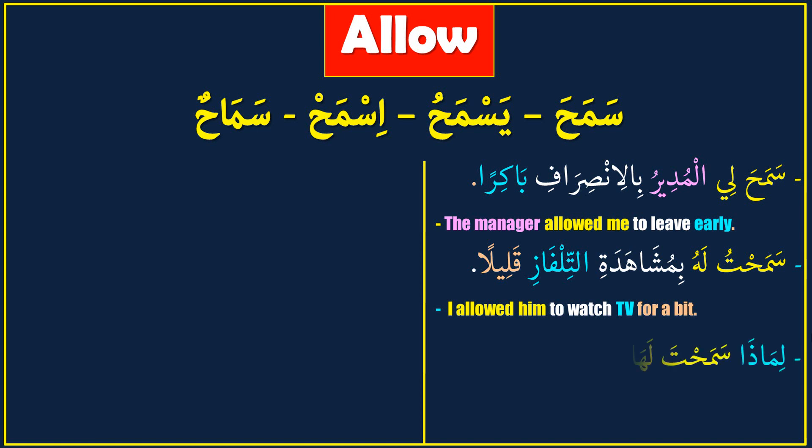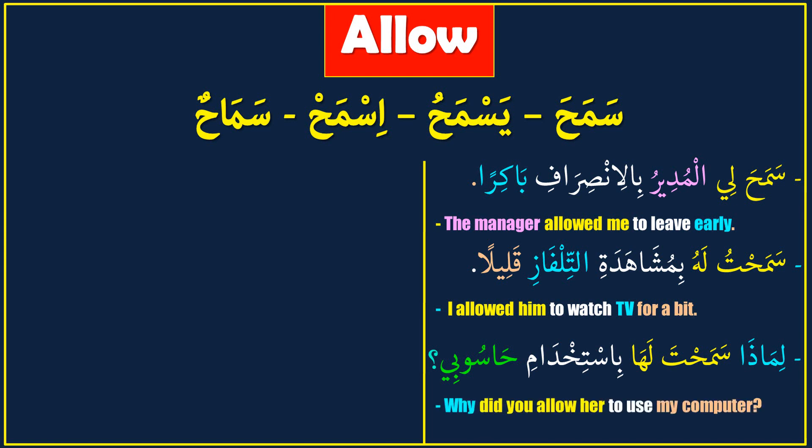Next sentence: 'Limadha samahta laha bistighdami hasubi?' — it means 'Why did you allow her to use my computer?' Limadha: why? Samahta laha: did you allow her? Bistighdami: to use. Hasubi: my computer.